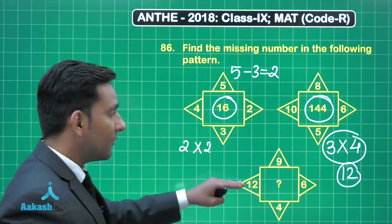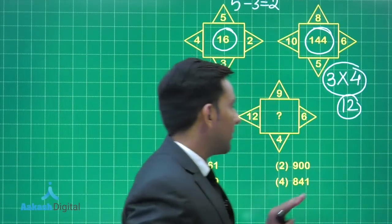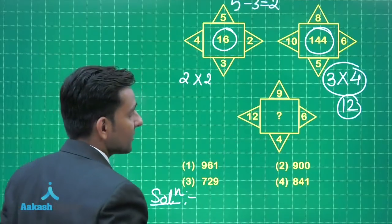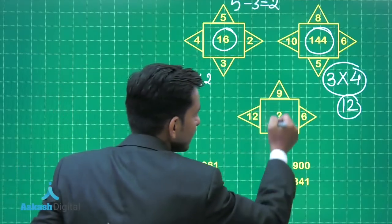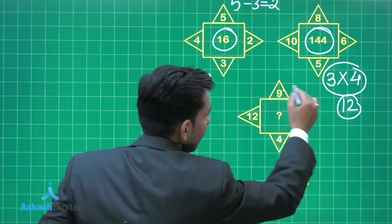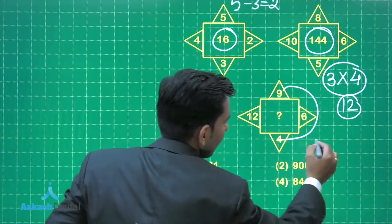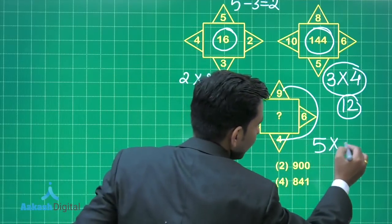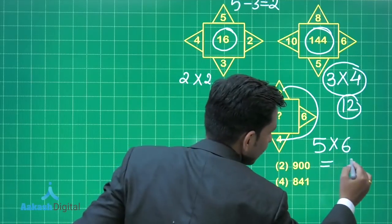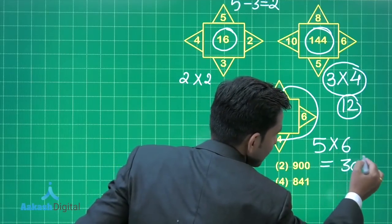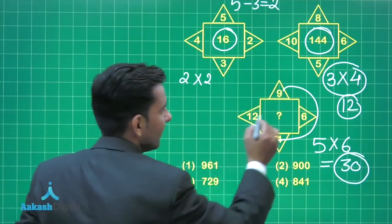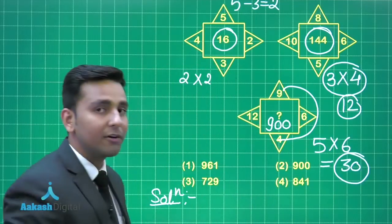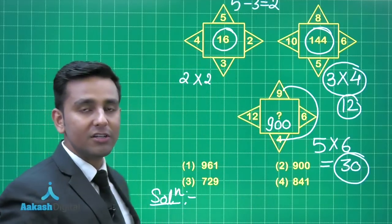Now come to the third figure. We have to apply the same pattern. So first find the difference of the opposite faces: 9 minus 4 we are obtaining 5, and 12 minus 6 we are getting 6. The product is 30, and the square of this number 30 is 900.